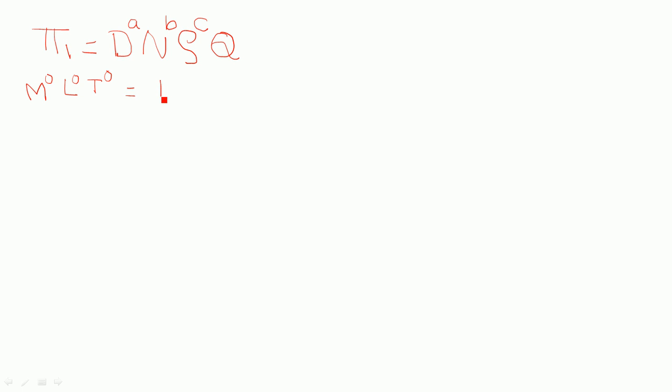Diameter is having dimension of L raised to the power a, N to the power minus 1. Equate the LHS and RHS. For M, M power is equal to 0. M power is equal to 0 on left-hand side. So here minus 3. Here only c is there.